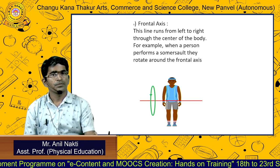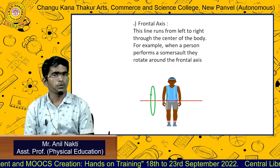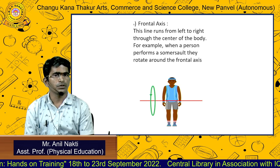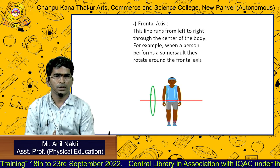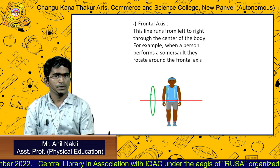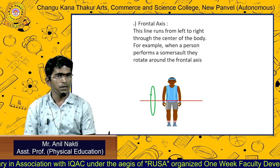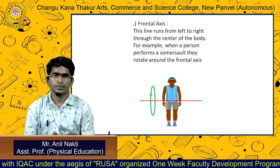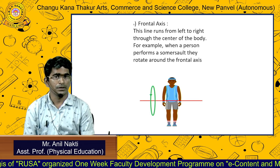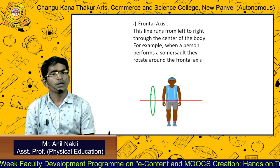The last one is the frontal axis. The line runs from left to right through the center of the body. For example, when a person performs a somersault, they rotate around the frontal axis. So now we have learned about the planes and axis, and whatever movement occurs from our body from birth occurs in those planes and axis. Thank you.